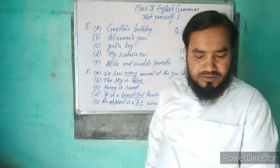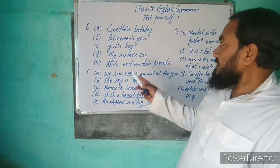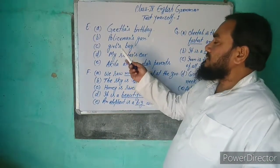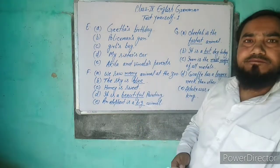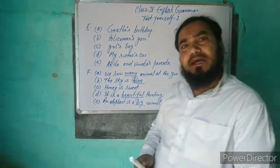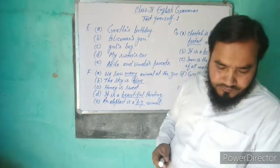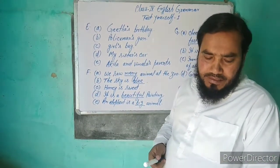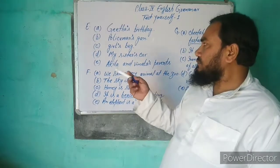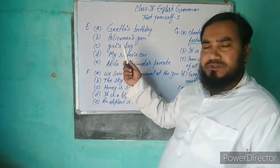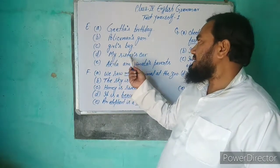اس کے بعد C ہے: The bags belonging to the girls۔ تو possessive noun لگانے کے بعد یہ Girls' bags بنے گا۔ اس کے بعد D ہے: The car belonging to my sister۔ تو اس کا possessive noun بنے گا: My sister's car۔